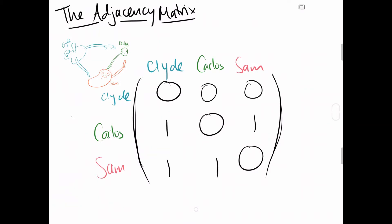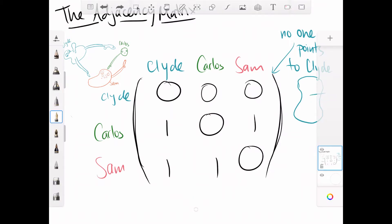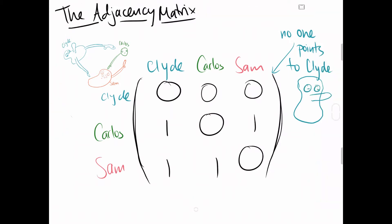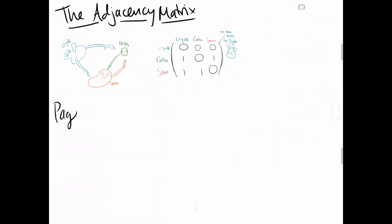Note, there are all zeros along the diagonals to prevent the friends from voting for themselves as the most likable. Each row is who receives likes. For example, Clyde's row vector is 0-0-0, meaning that nobody likes Clyde. Each column vector represents who they like. For example, Clyde likes both Carlos and Sam, thus Clyde's column vector is 0-1-1.